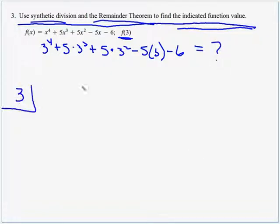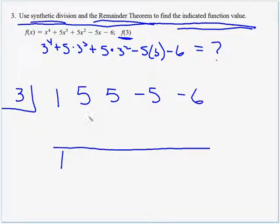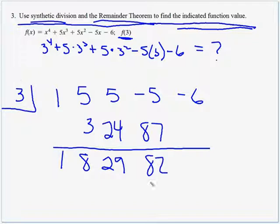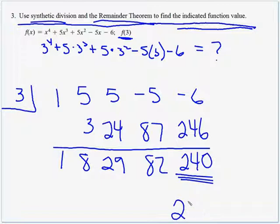Okay, I'm going to divide my 3 into 1x to the fourth, 5x cubed, 5x squared, minus 5x minus 6. I drop my 1, and I multiply and add, and multiply and add. 3 times 29 is the same as 3 times 30, which is 90 minus 3 is 87. If we add there, we get an 82. 3 times 80 is 240, and then the 2 times 3 is 6, so that's a 246. And if we add there, we get 240. That's the answer we're looking for, just the remainder.